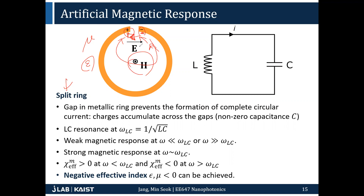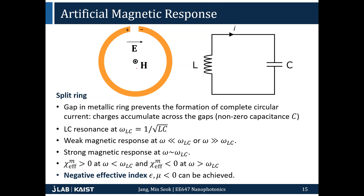How can you make a meta-atom that only has a magnetic response and not an electric response? The key is to introduce another electric dipole that points in the opposite direction, so that the electric dipoles cancel each other out, whereas the magnetic dipoles enhance each other. That structure can be created by using a double split-ring configuration.